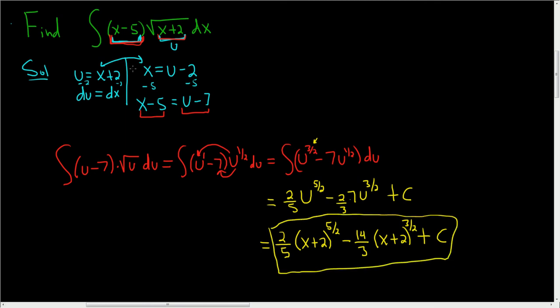Just to recap, when we first started this problem, we decided to try a u substitution. u was whatever was inside the square root. So in this case, x plus 2. We got du equals dx. But we had a problem. We have this x minus 5.